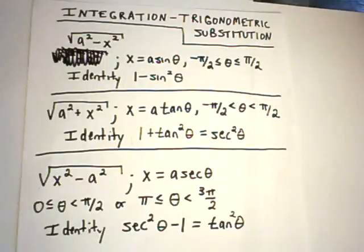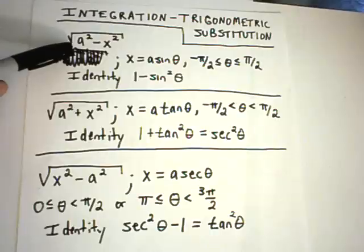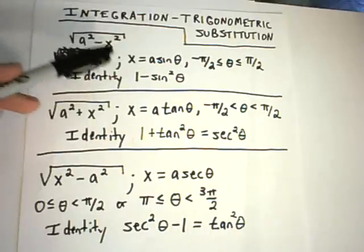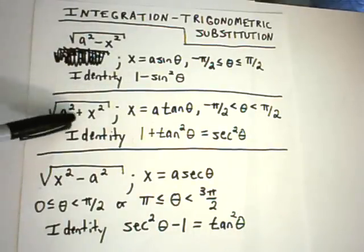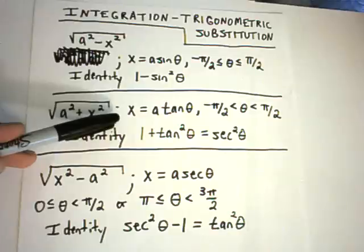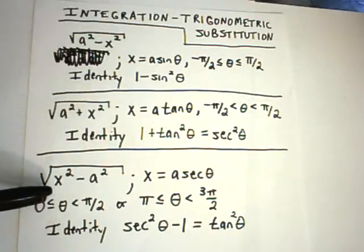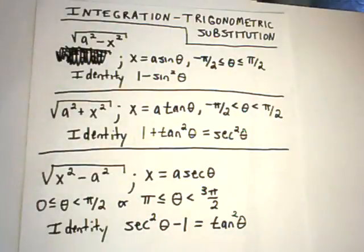Basically, trigonometric substitution is used when you have a root floating around. And the roots are of the form a, where a is a number. So a squared minus x squared, we'll use a particular substitution. If it's a squared plus x squared, we'll use a particular substitution. And if it's square root of x squared minus a squared, we'll also use a different substitution.